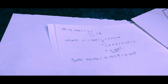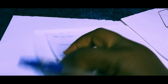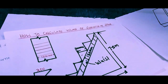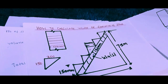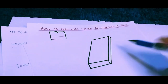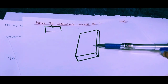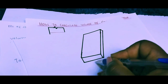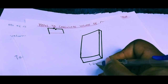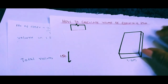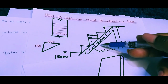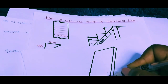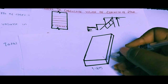Now we proceed to the waist. The waist is indicated clearly here — it is the concrete below the soffit of the stair. The width of the stair is 1.2 meters, and the waist thickness is 150 millimeters. We now need to find the length of the waist.